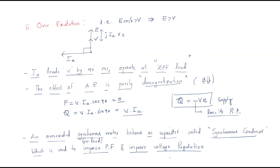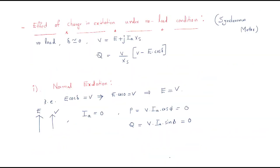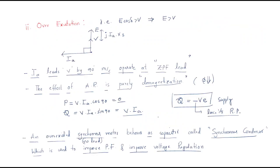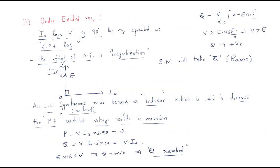This is the synchronous motor under no-load condition summary: under normal excitation, both active and reactive power are zero; under over-excitation, it acts as a synchronous condenser; under under-excitation, it acts as an inductor — a capacitor gives reactive power and an inductor takes reactive power. I hope all of you understand the session, thank you.